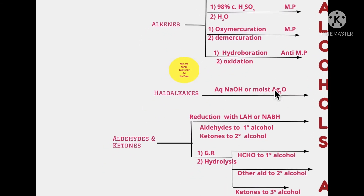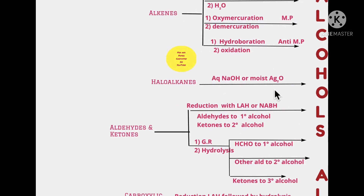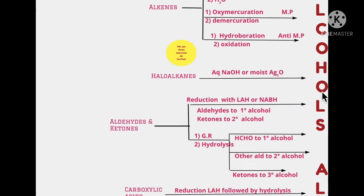Similarly, let's go on to the next method of preparation of alcohol — haloalkanes. We did this in the last chapter as well. Haloalkanes react with aqueous NaOH or moist silver oxide to give us alcohols. Don't worry, we will be writing these reactions later on. This is introducing the flowchart method.